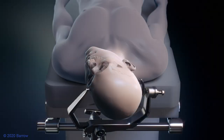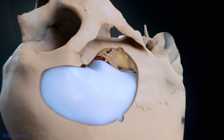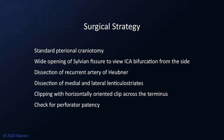The patient was positioned supine. A standard pterional craniotomy flap was used. Key surgical steps included this craniotomy with wide sylvian fissure split to view the ICA bifurcation from the side. The key steps also included the dissection of the recurrent artery of Hubner off the aneurysm fundus and the medial and lateral lenticular striates behind and adjacent to the aneurysm neck. The clip was applied horizontally with its orientation across the terminus. Finally, checking for perforator patency was critical.